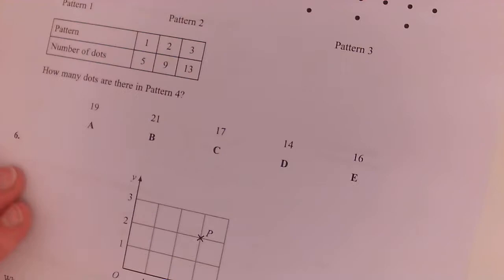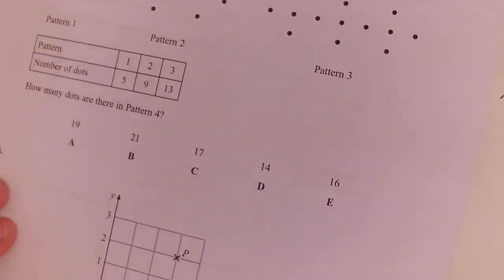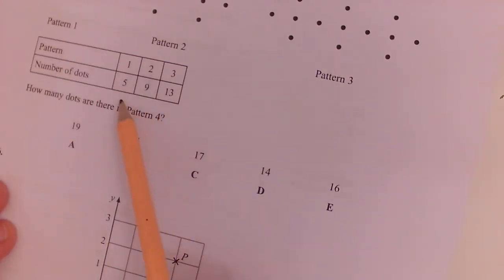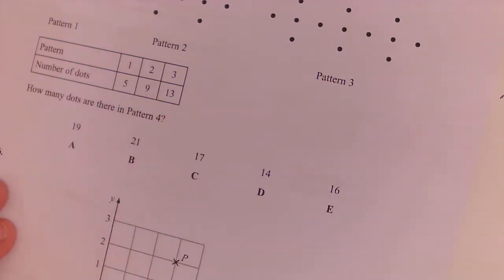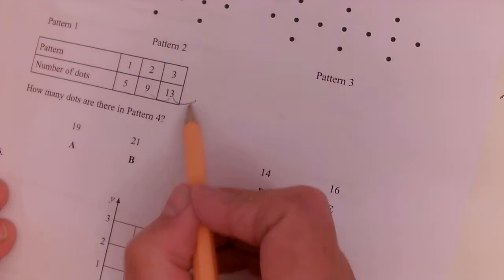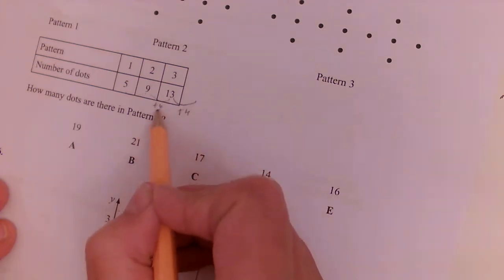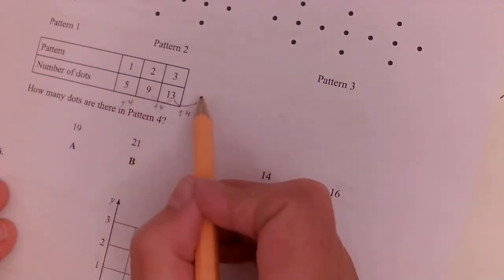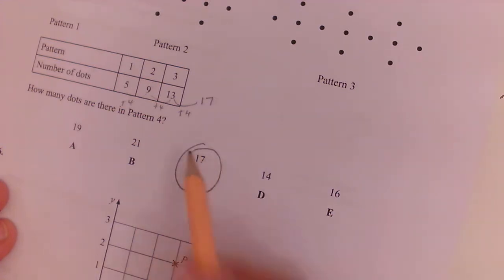Question five. Here is a sequence of dots. So how many is in the next pattern? Well, we could draw it all out again, or we can see that each time we're adding on four. So plus four, plus four, plus four.